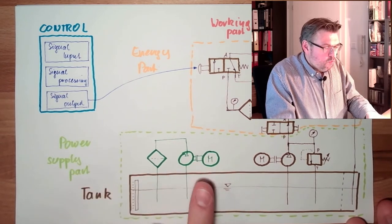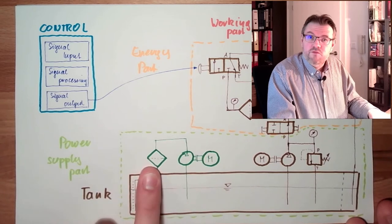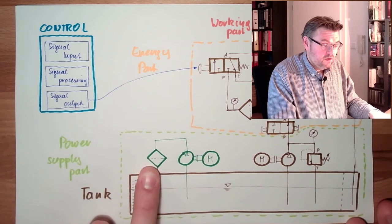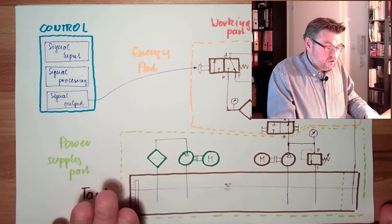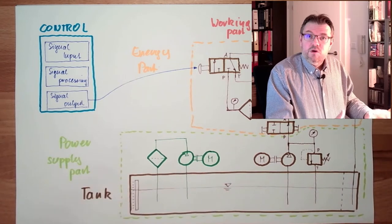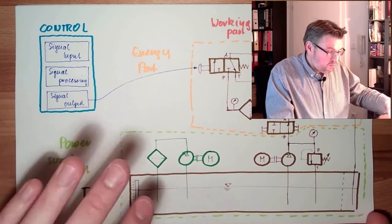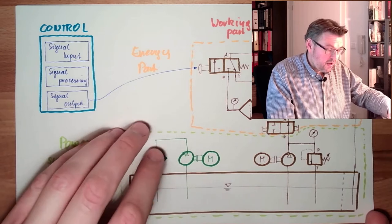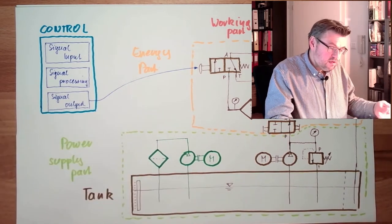Then what else is inside? There are filters inside. We are going to talk about filters. What is not in this picture? There are accumulators, pressure accumulators, also part of the power supply energy supply part. And of course there is the tank.